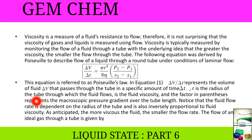And the factor in the parenthesis represents the macroscopic pressure gradient over the tube length. Notice that the fluid flow rate is dependent on the radius of the tube and also inversely proportional to the fluid viscosity. As anticipated, the more viscous the fluid, the smaller the flow rate.